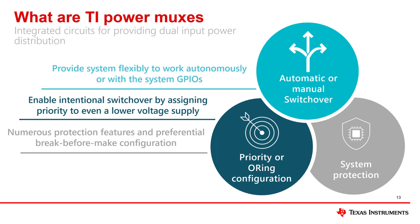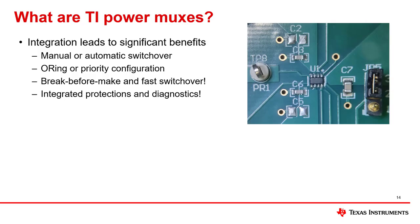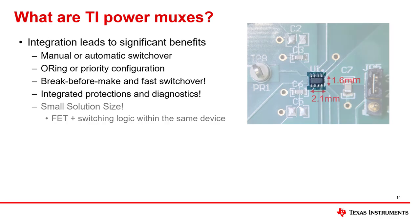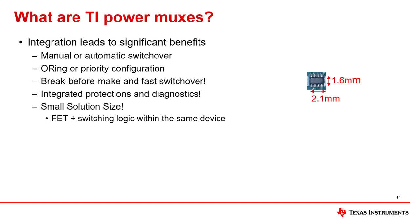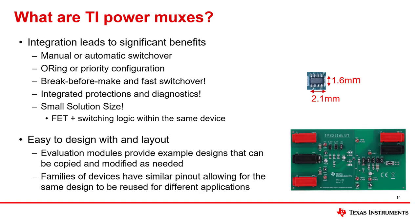TI power muxes are developed in the preferred break-before-make configuration, with protection options which range from smaller, less complex designs to providing all of the protection features listed in the previous slide. Another key feature of our devices is integration — instead of 10-plus discrete components, our power mux device enables design flexibility with one device in a very small footprint. These devices are also very easy to design with and lay out, due to the collateral and evaluation modules we provide for each device. The evaluation modules shown to the right provide example designs which can be copied and modified as needed, along with a schematic and layout to begin your design.